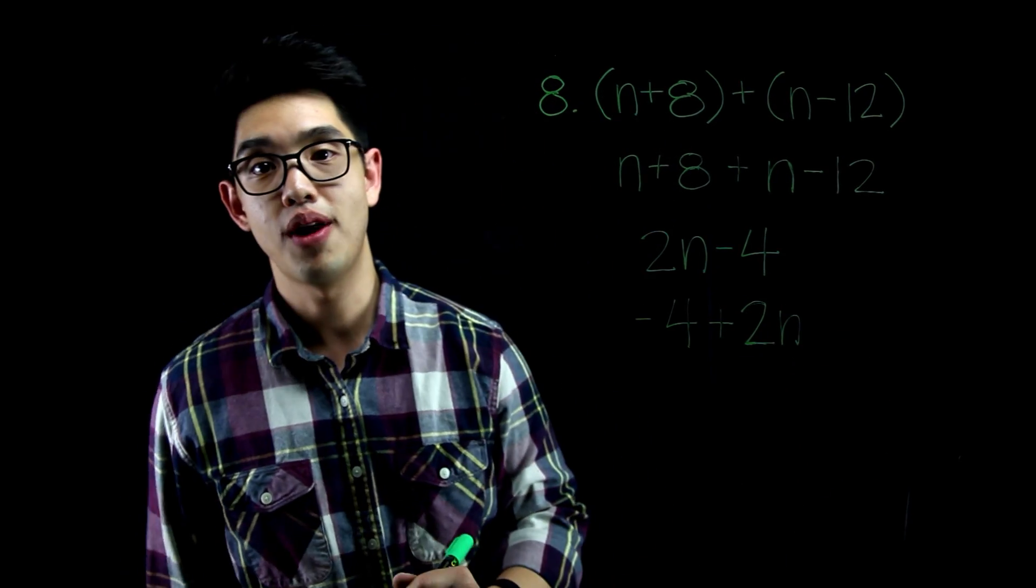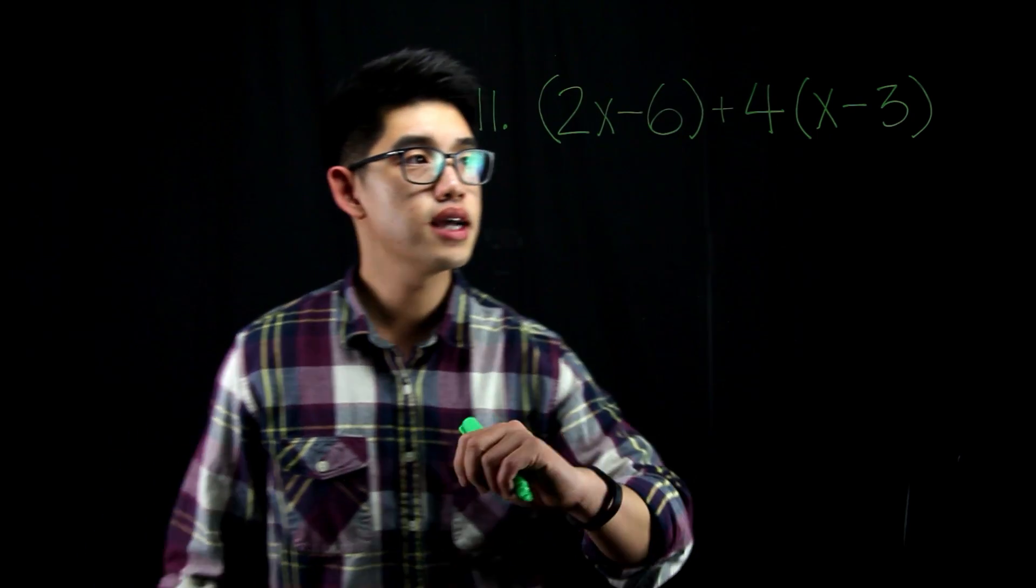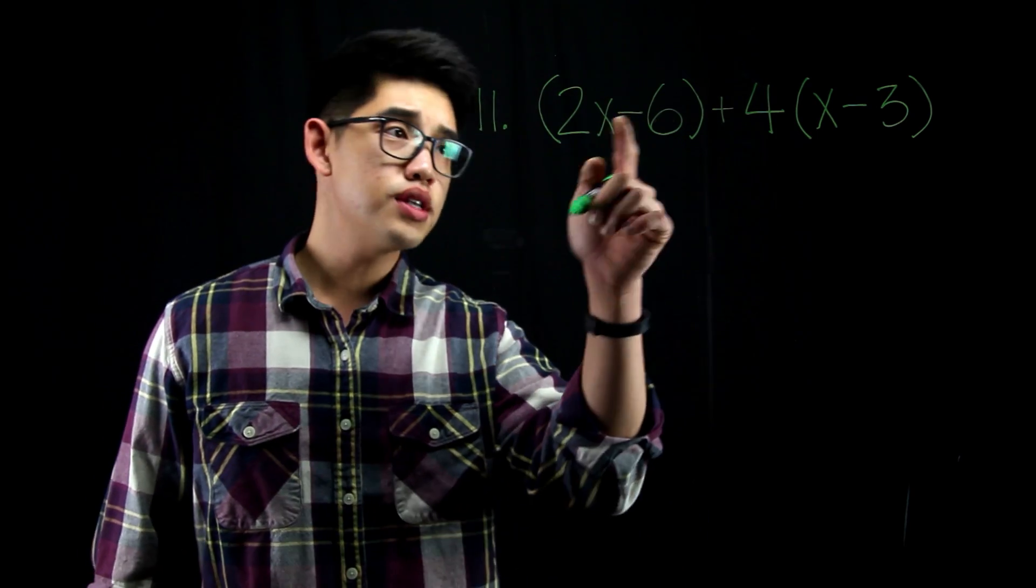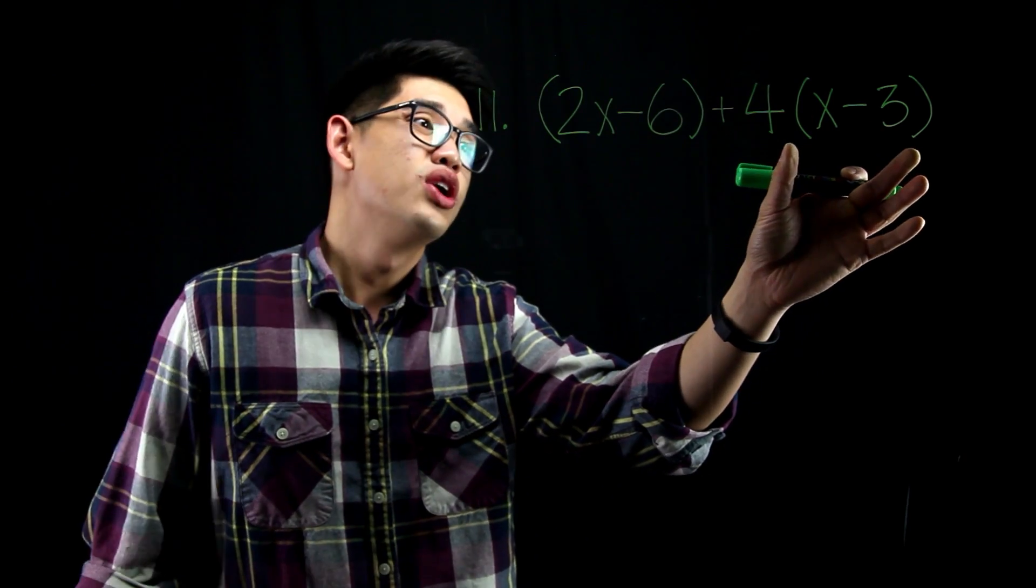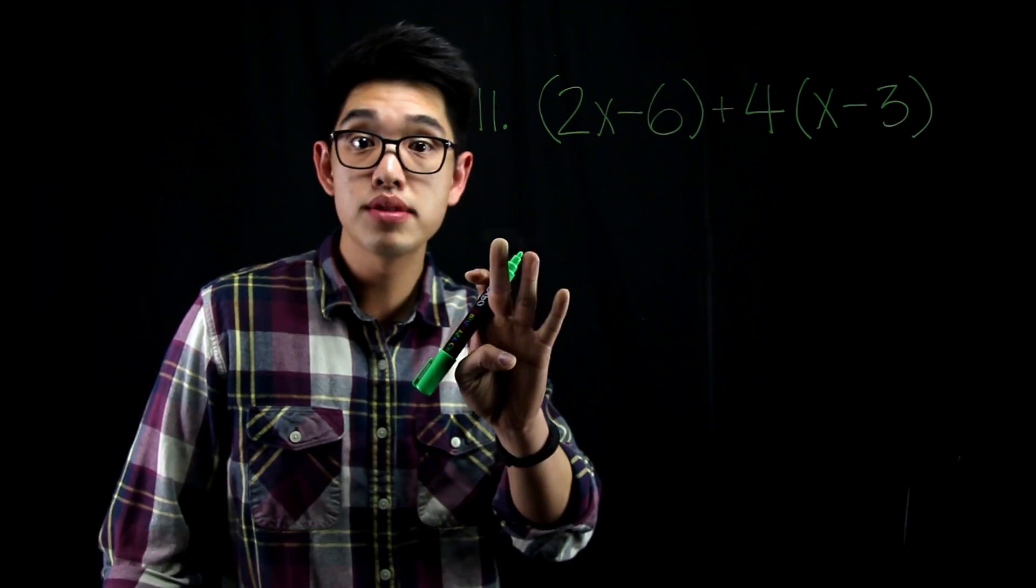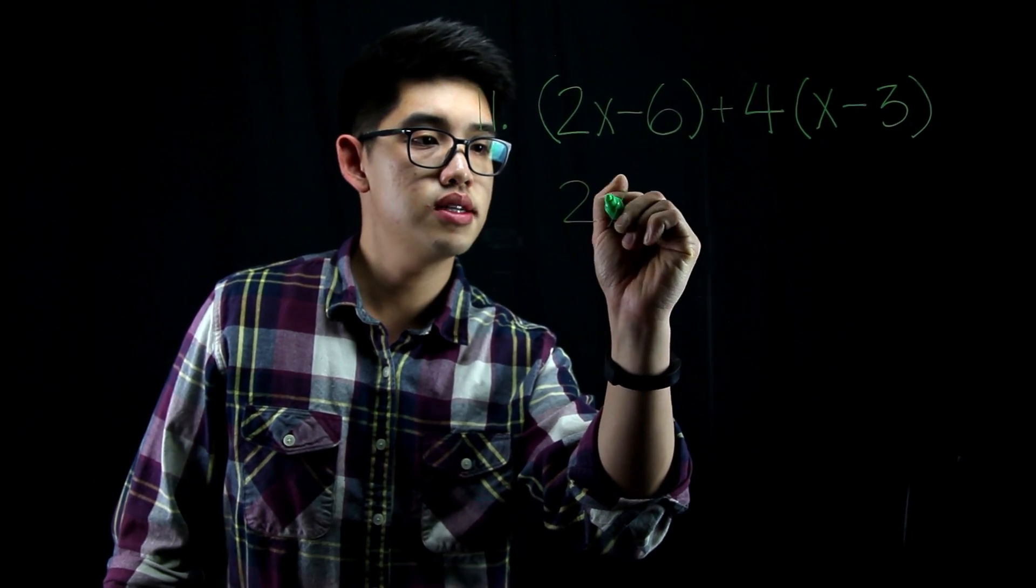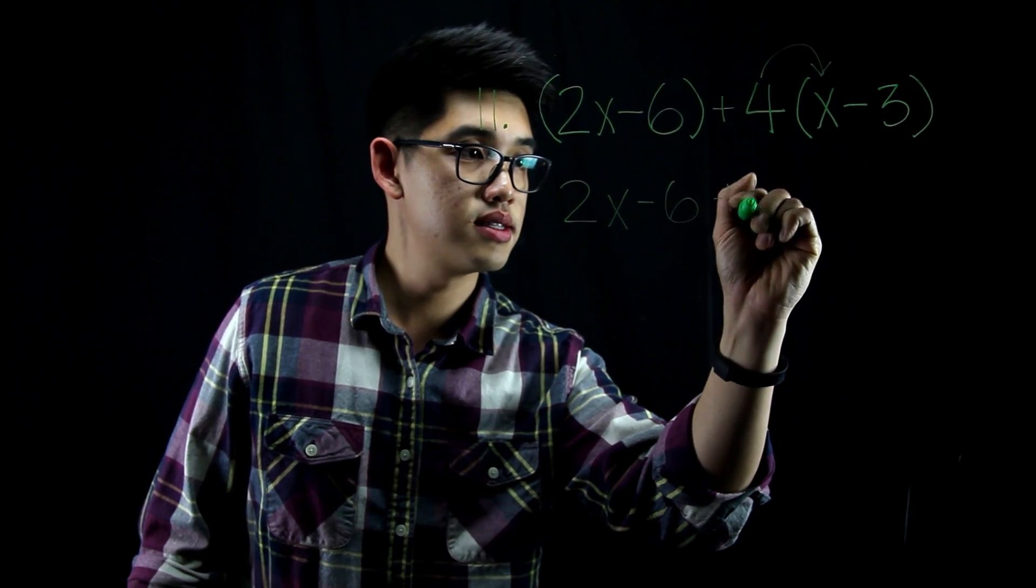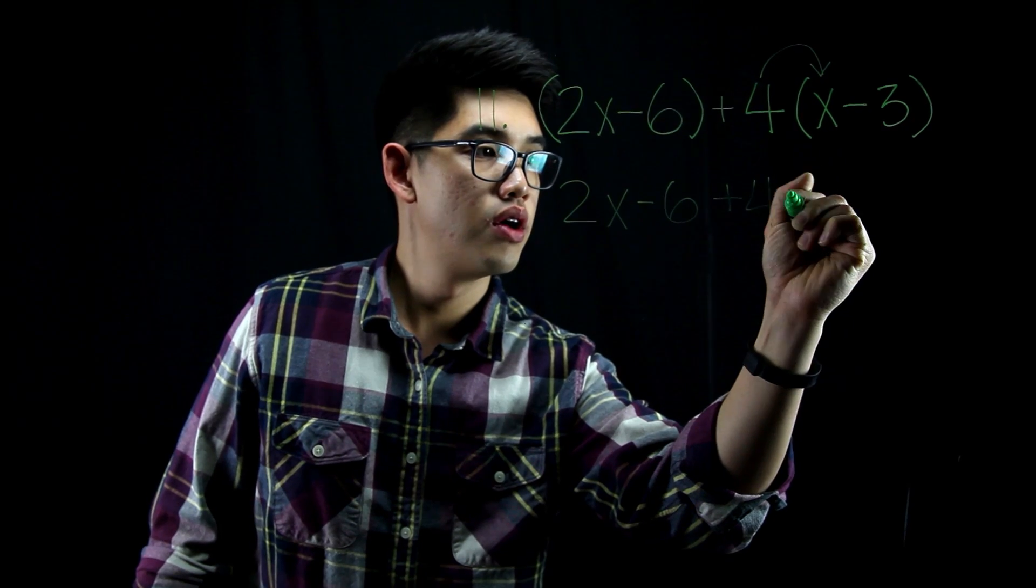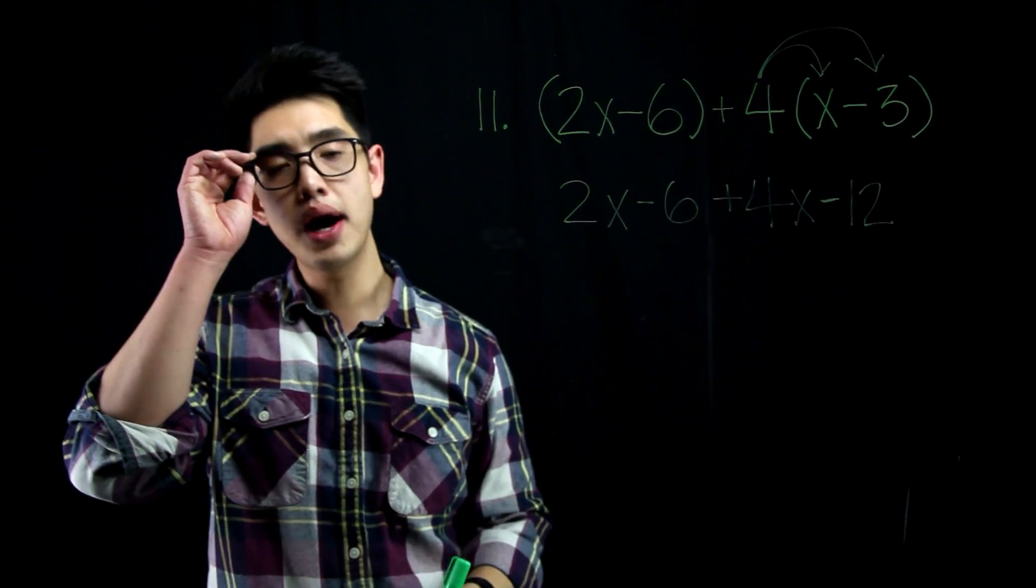For number 11, you have 2x minus 6 plus 4 times the quantity x minus 3. First things first, I'm going to distribute the 4 to the x and then to the negative 3. Because right here, what it really is saying is you have x minus 3 but 4 times that. You have 4 times the quantity of x minus 3. Let me write down 2x minus 6 first. And then I'm going to distribute 4 times x. That's going to be 4x. And then 4 times negative 3. That's going to be negative 12.